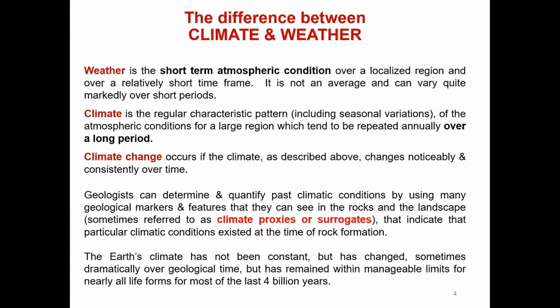Geologists can determine and quantify past climate conditions by using many geological markers and features that they can see in the rocks and the landscape, sometimes referred to as climate proxies or surrogates, that indicate that particular climatic conditions existed at the time of rock formation. The Earth's climate has not been constant but has changed, sometimes dramatically over geological time, but has remained within manageable limits for nearly all life forms for most of the last 4 billion years.